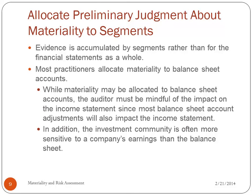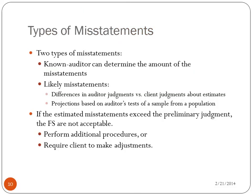The investment community is often more sensitive to earnings than the balance sheet — most investors look at cash flows first, then the income statement. The two greatest types of misstatements are: known misstatements, where the auditor can determine the amount; and likely misstatements, which are differences in auditor versus client judgments about estimates, and projections based on auditor tests of a sample. If estimated misstatements exceed the preliminary judgment, the financial statements are not acceptable, and additional procedures must be performed requiring client adjustments.